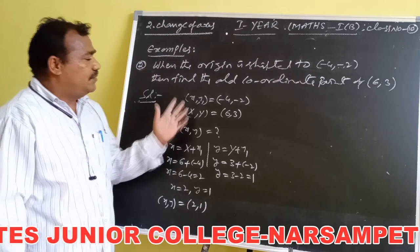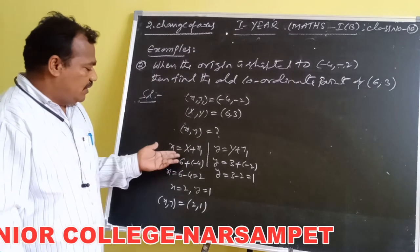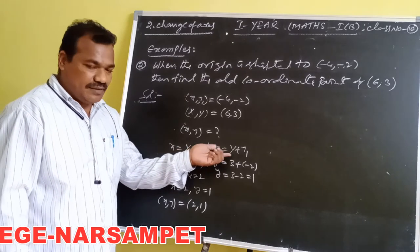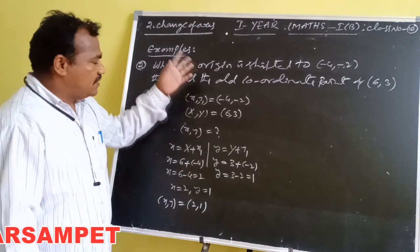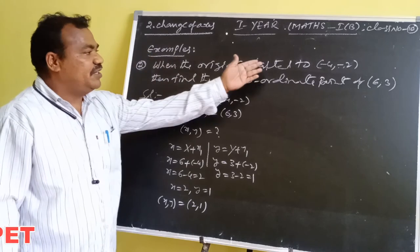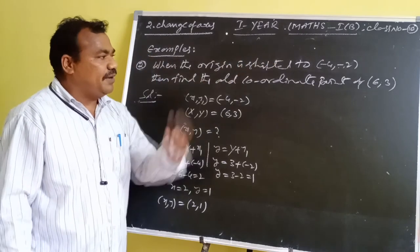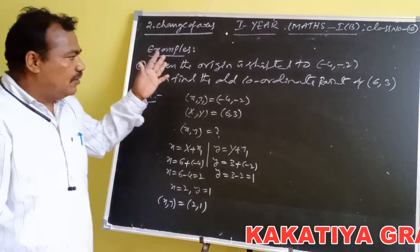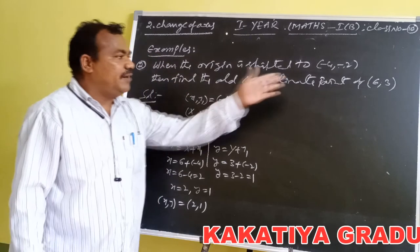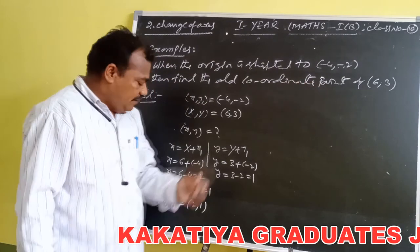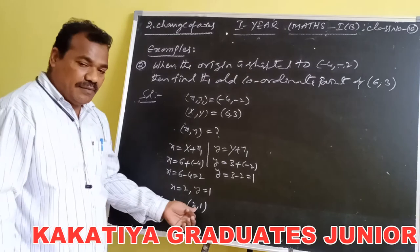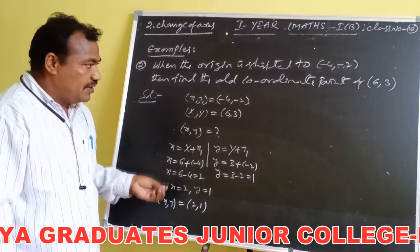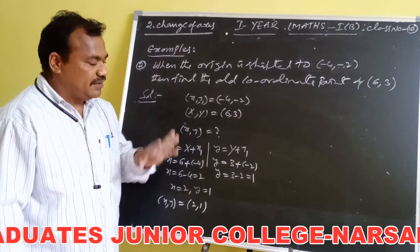By using the relation small x equals capital X plus x₁, and small y equals capital Y plus y₁: whenever the origin is shifted to the point (−4, −2), the old coordinate of (6, 3) is (2, 1). This is the old system coordinate point of (6, 3).